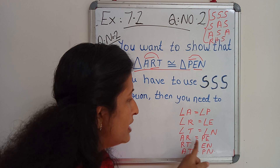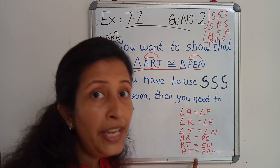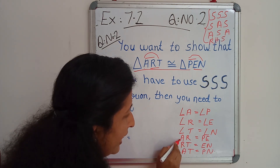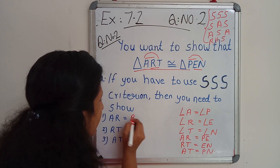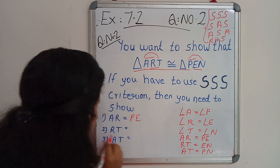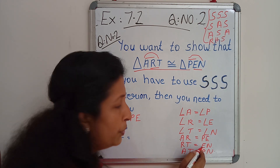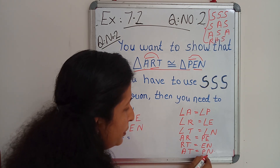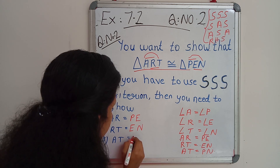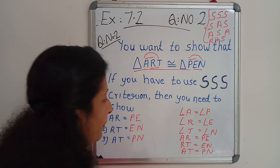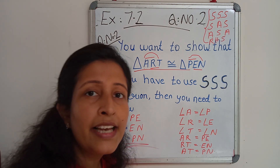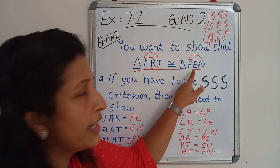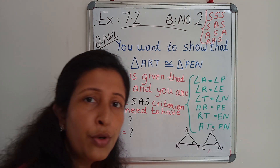We know that if 2 triangles are congruent, their corresponding angles and corresponding sides should be equal. So AR equal to PE, RT equal to EN, and AT equal to PN. Now we have 3 corresponding sides and we proved that according to SSS criteria these 2 triangles are congruent. Now we can go through question number B.